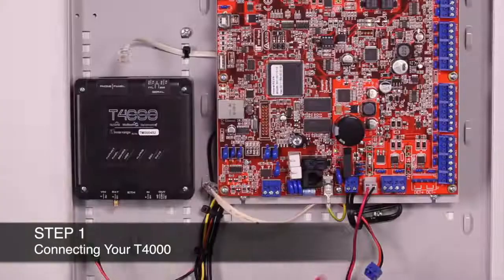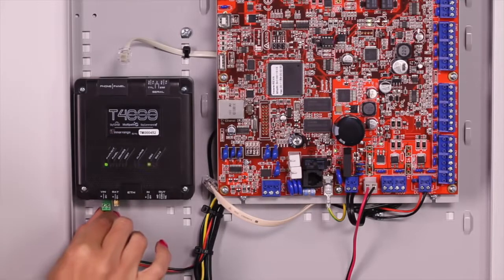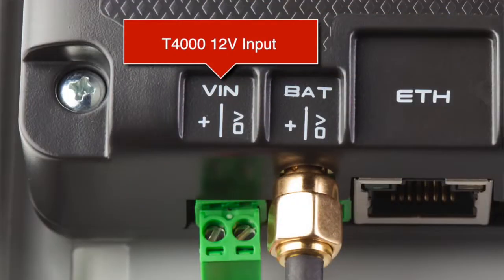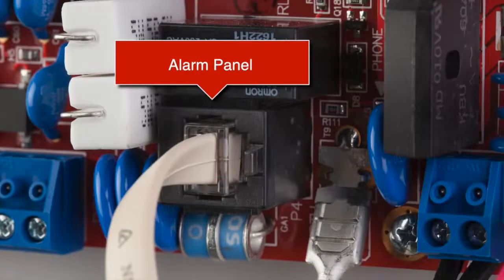Step one: connect the T4000 to your alarm panel's 12-volt detector power supply. If your alarm panel cannot support any more devices, the T4000 is capable of being powered standalone by a DC plug pack. At this time, you can also connect the alarm panel's dialer cable to your T4000.